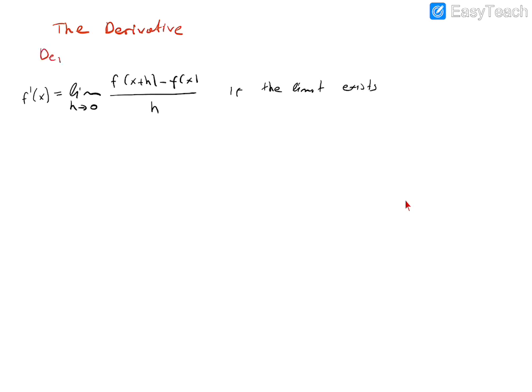So this is the definition of the derivative. This is the derivative of f at x, f prime of x. And it is denoted f prime. So this notation is written f prime of x.